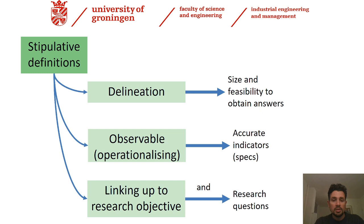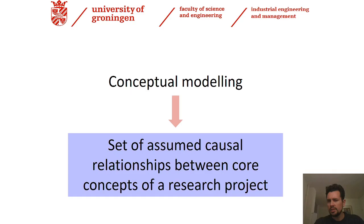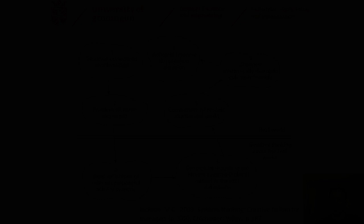This linking characteristic of stipulative definitions not only applies to the research objective but also to our research questions. Here we enter one of the last topics of this first part of the book: conceptual modeling — the causal relationships between subsystems, inter-relations, inputs and outputs, the so-called system description. This particular figure, taken from the book on systems thinking by Jackson, divides conceptual modeling into the real world and that world in terms of systems thinking.